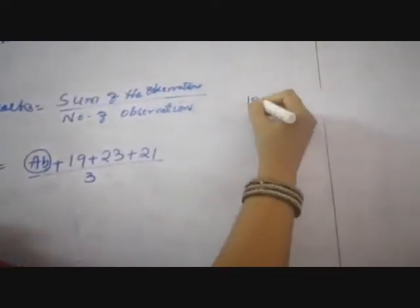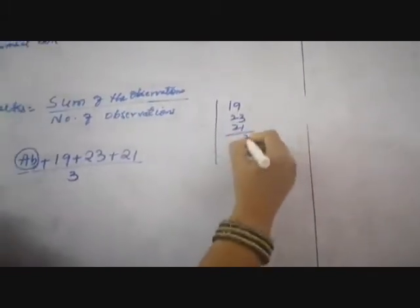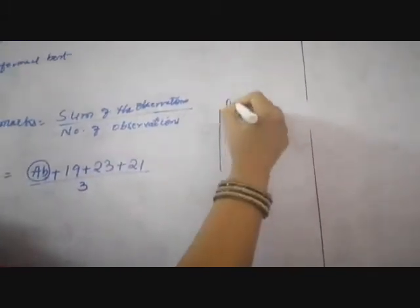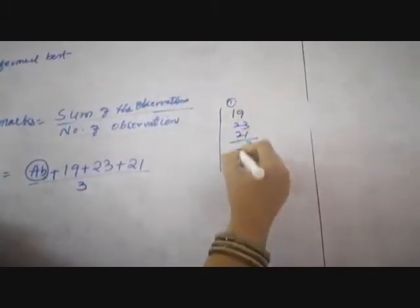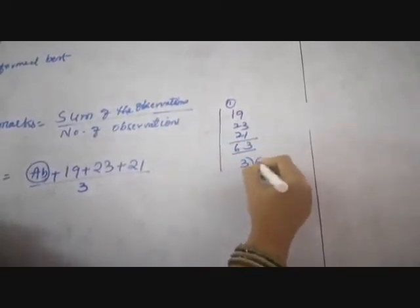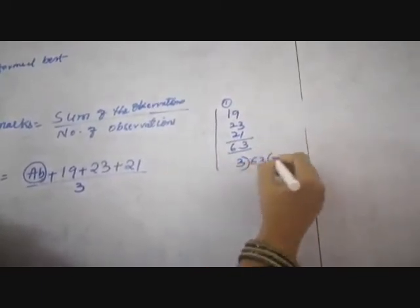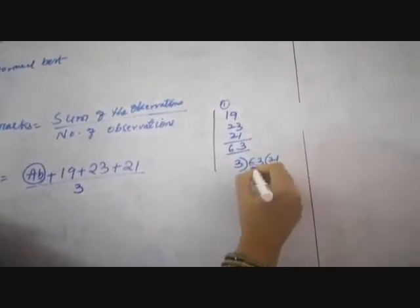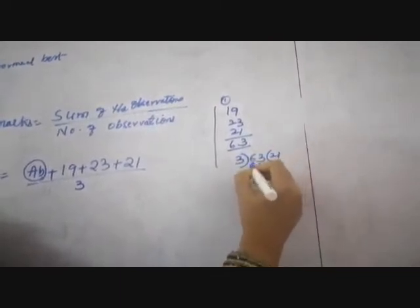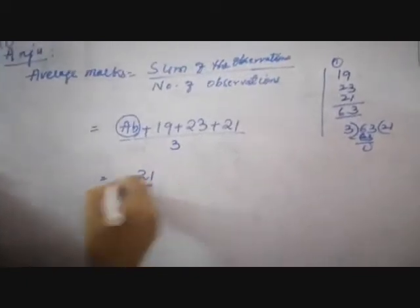So what is the addition? 19 plus 23 plus 21. Check it out children — that gives 63. So 63 divided by 3. Your average marks is nothing but 21.